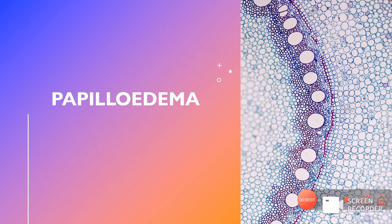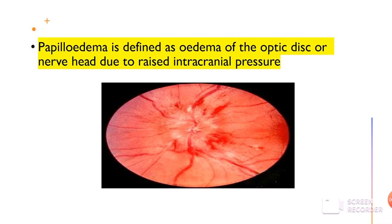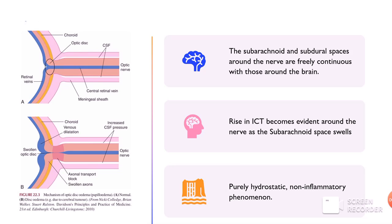What is papilledema? Papilledema is defined as the edema of the optic disc or the optic nerve head primarily due to raised intracranial pressure. The optic nerve head is enclosed up to the lamina cribrosa by the various meninges coming from the brain, and the subarachnoid space and subdural spaces are continuous around the nerve from the brain.